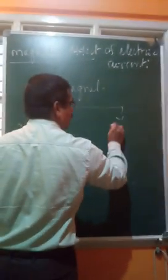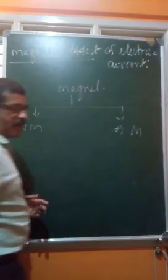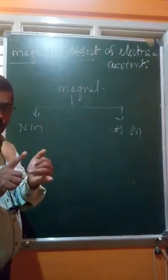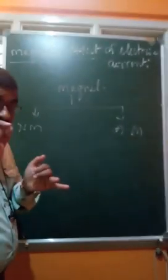Now let's discuss what a magnet is and what types exist. Magnets are classified into two types: natural magnets and artificial magnets. Natural magnets are found in nature — for example, among iron ores, hematite (Fe2O3) and magnetite (Fe3O4), magnetite is a natural magnet ore. Lodestone is another example of a natural magnet.